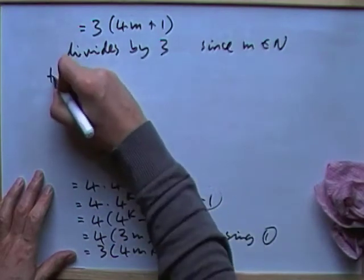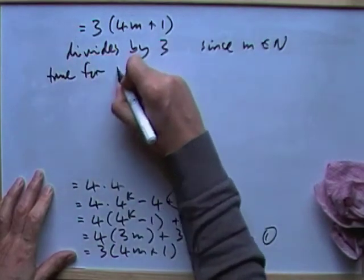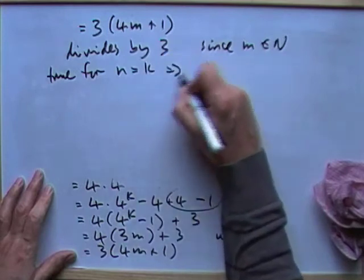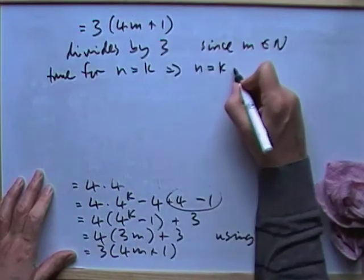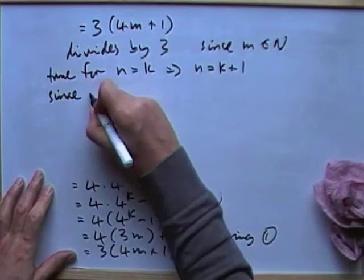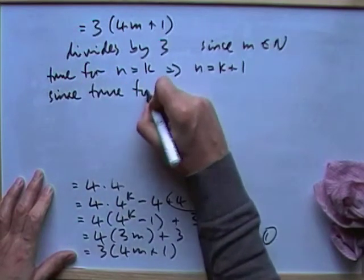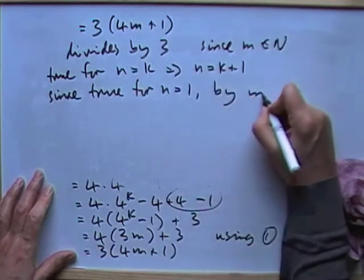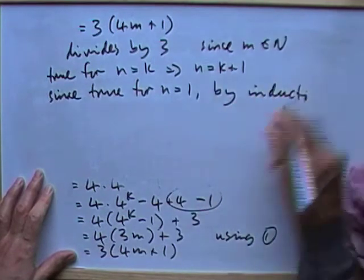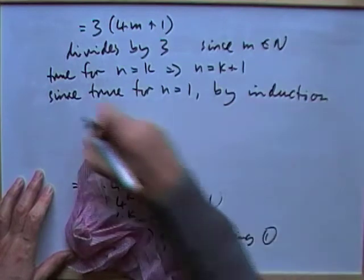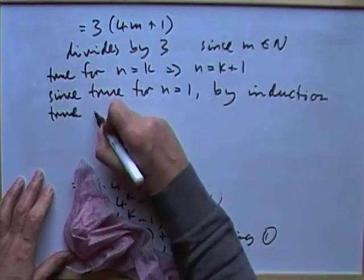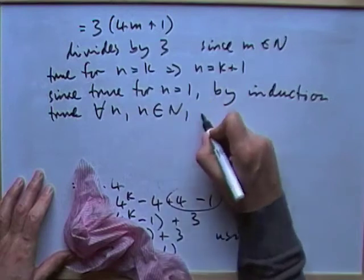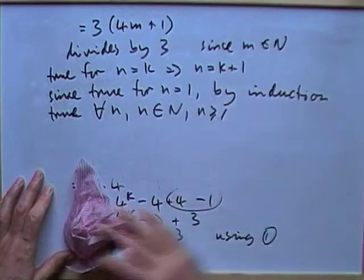Then as before, true for n equals k meant it was certainly true for n equals k plus 1. And since it was true for n equals 1, then by induction, that means it's true for all n. n in the natural numbers, n greater than or equal to 1.